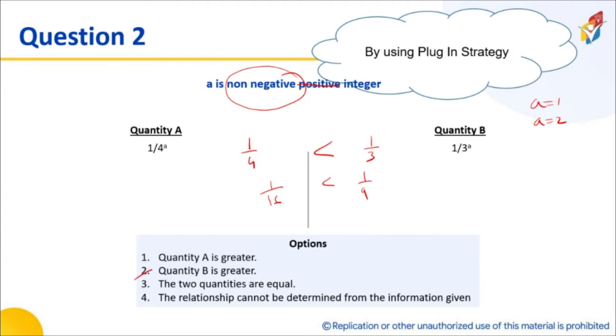What is the twist? When they say non-negative boundary, you should think about, what is the meaning of non-negative? In what way is it different from positive? When they say non-negative, a equal to 0 is possible. The moment you put a equal to 0, you get both of them are equal.